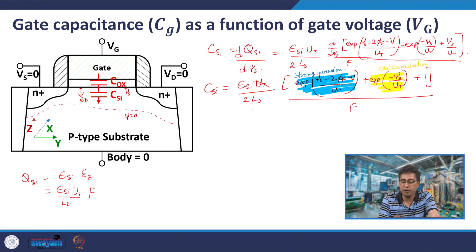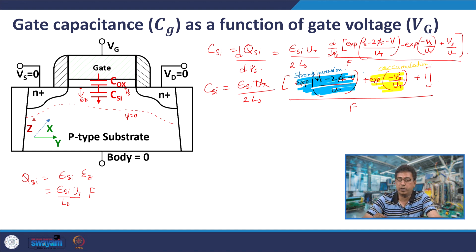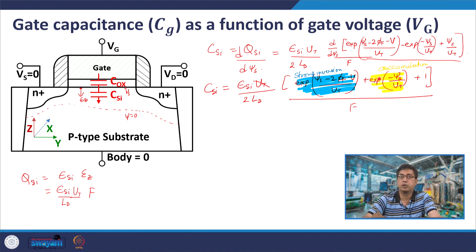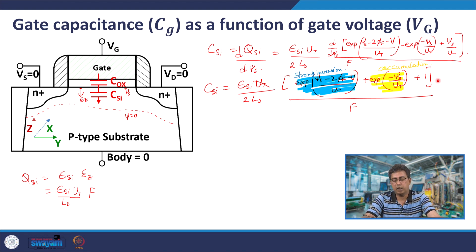In between strong inversion — when it is not in strong inversion and when the first term (the blue highlighted term) is also negligible, as well as the orange highlighted term is also negligible — it is the depletion charge which dominates. The capacitance is non-linear because of f.